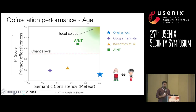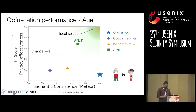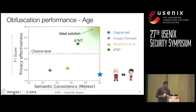Here I present the evaluation in the age obfuscation setting. We evaluate obfuscation performance along two axes: on the Y axis is privacy effectiveness, and on the X axis is semantic consistency. We measure privacy effectiveness by seeing how well the adversary classifies the obfuscated text — worse adversary performance means better privacy effectiveness. The red line shows chance level performance, above which the adversary is only randomly guessing. Semantic consistency is measured using a metric called METEOR, commonly used in machine translation, with values between zero and one. Ideally you want to be in the top right corner — perfectly retained meaning but the adversary always guesses your age wrong.